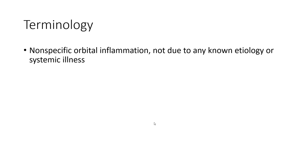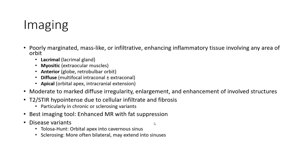Pseudotumor imaging of the orbit can be non-specific orbital inflammation, not due to any known local or systemic cause. It presents as mass-like or infiltrative enhancing inflammatory tissue involving any areas of the orbit. It can involve the lacrimal gland, myositis, anterior tissues, apical region, and show enlargement and enhancement of involved structures. T2 signal is hypointense due to cellularity and fibrosis.